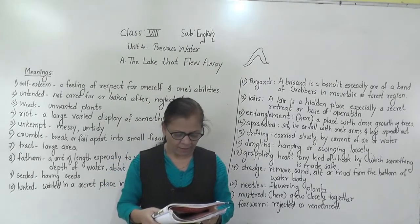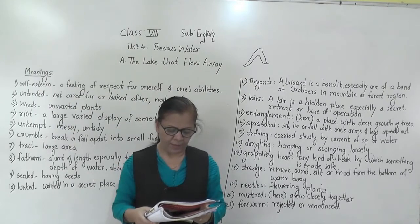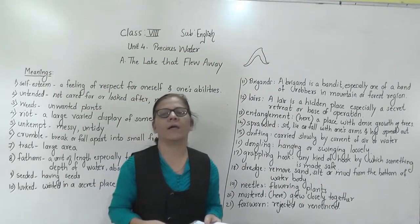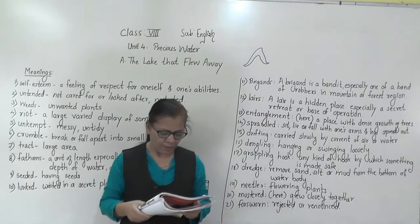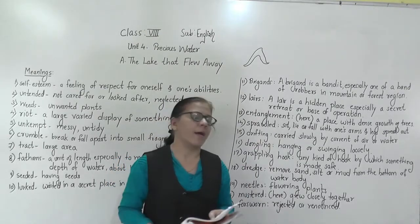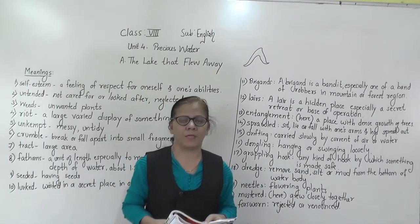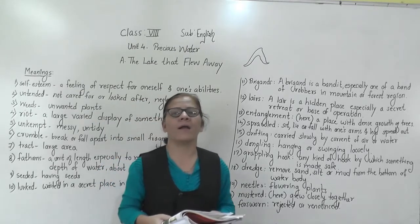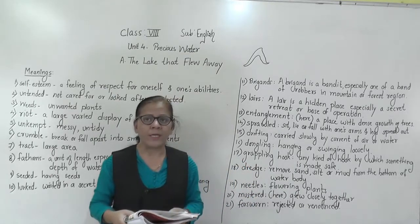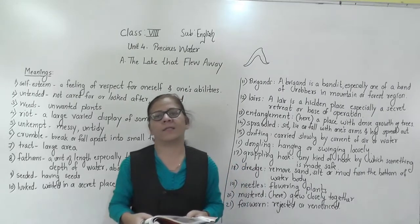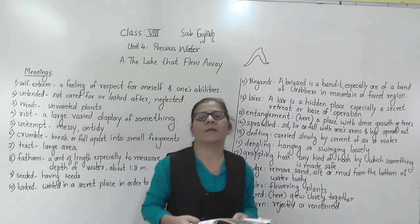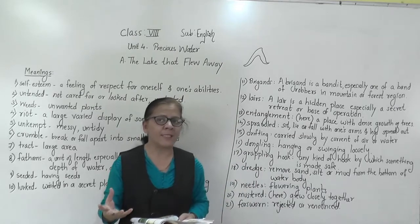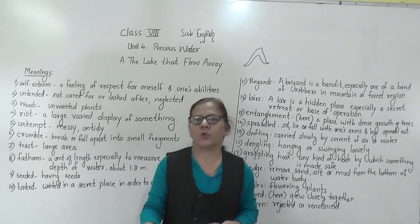'Its weeds run riot like unkempt hair.' Weeds means unwanted plants which are grown under the lake. These weeds run riot — riot means a large varied display of something — and they lie like unkempt hair. Unkempt means messy, untidy. So these weeds, which are grown under the lake, lie like messy hair. When our hair is not combed, how it looks? It looks messy — so these weeds also look messy.